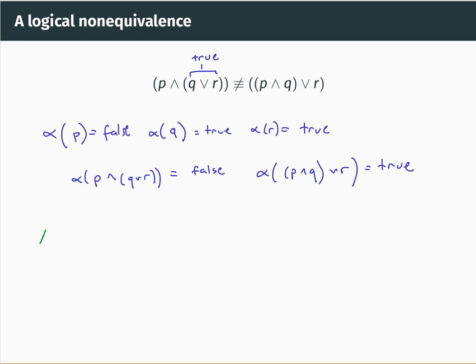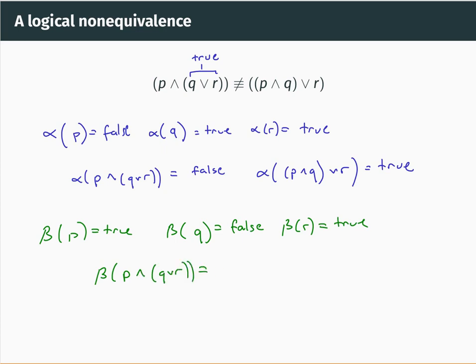Notice that for some truth assignments these two formulas do take the same truth value. For example, if beta of P is true, beta of Q is false, and beta of R is true, then beta of P and (Q or R) does equal beta of (P and Q) or R. But the fact that there exists at least one truth assignment giving different values means they're not logically equivalent. You only need one counterexample to show logical non-equivalence.